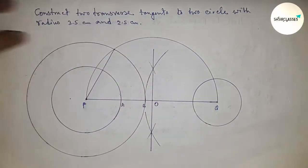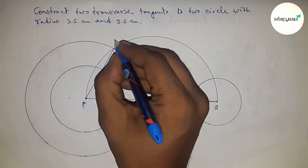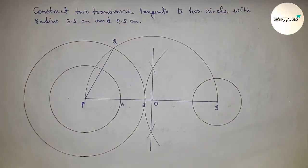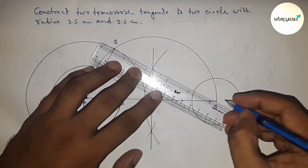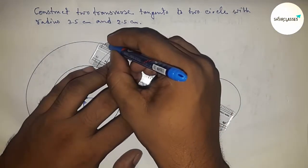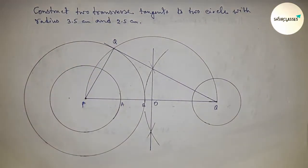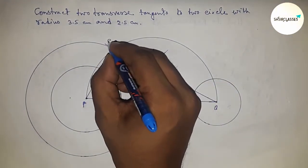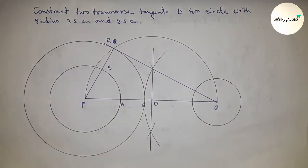Joining the intersection points. This gives us point R, point A, and point S on the constructed figures.